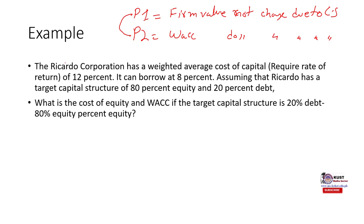Let's have an example to make it clear that although cost of equity increases, WACC remains the same — related to proposition two. The Ricardo Corporation has a weighted average cost of capital, or required rate of return, of 12 percent. It can borrow at 8 percent, so the cost of debt Rd is 8 percent. Assume Ricardo has a target capital structure of 80 percent equity and 20 percent debt. What is the cost of equity?